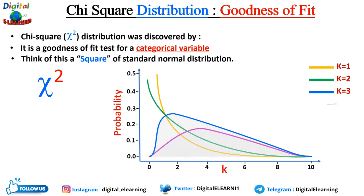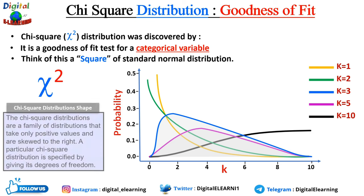If we increase k beyond five — say 10 — the distribution is skewed to the right. Chi-square distributions are a family of distributions that only take positive values and are skewed to the right. A particular chi-square distribution is specified by its degree of freedom, k.